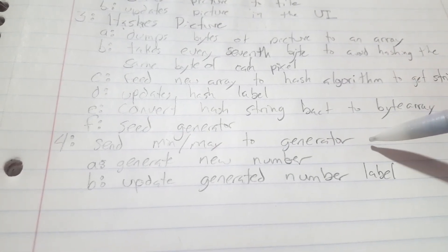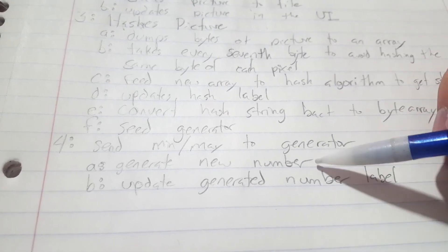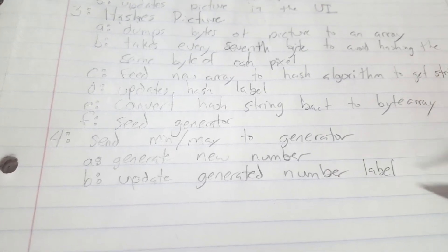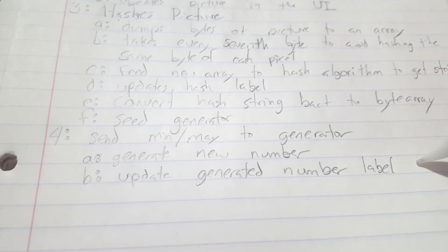So after it seeds the generator, it sends the min-max values to the generator. And then with that, it generates a new number, and then it updates the label so you can actually see the number that you generated.